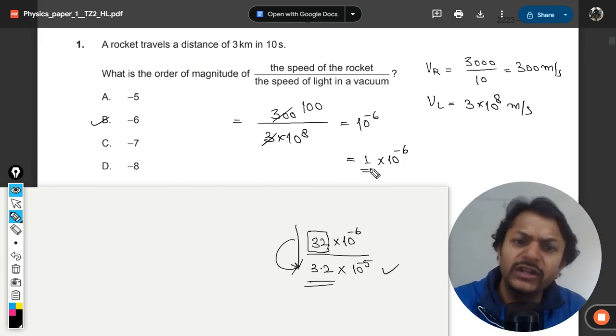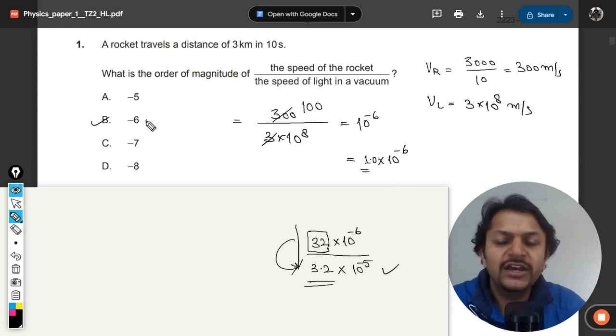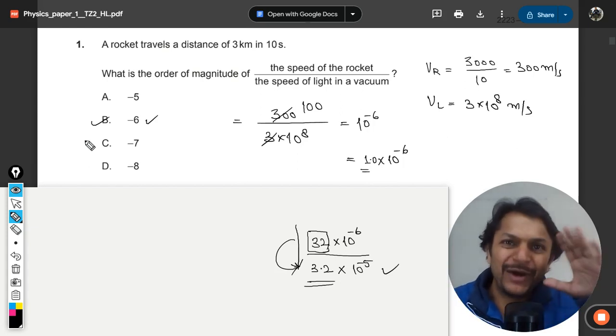Clearly, because it is only 1.0 you can say, so definitely the answer is 10 raised to power negative 6. So answer is B. This is how we do this question. All the best, bye, see you in the next video.